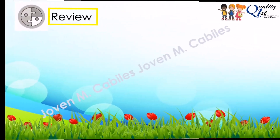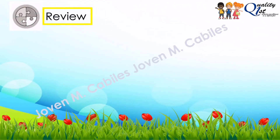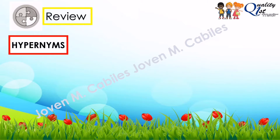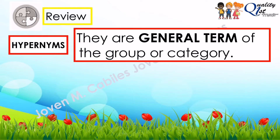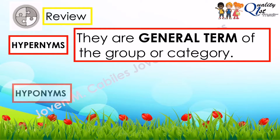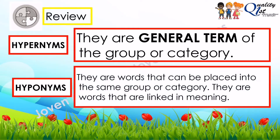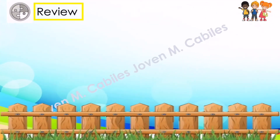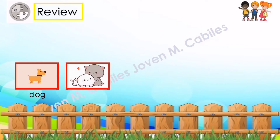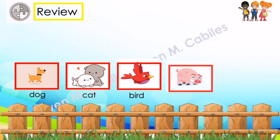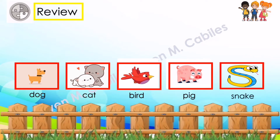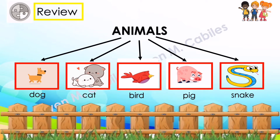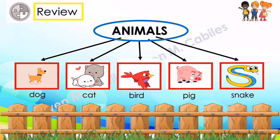Before that, let's have a short review of what you have learned last time. Hypernyms — when we say hypernyms, they are the general term of the group or category. When we say hyponyms, they are words that can be placed into the same group or category. They are words that are linked in meaning. Now let's have these examples: the dog, the cat, the bird,